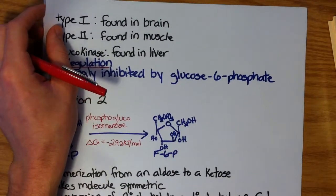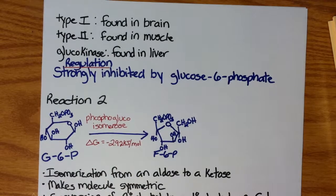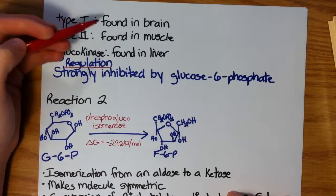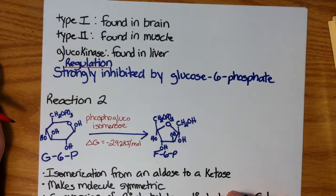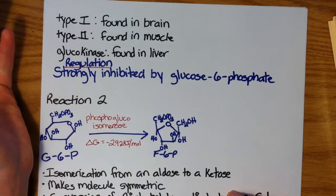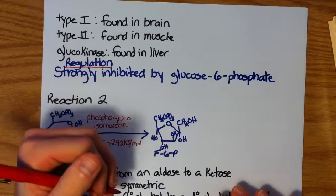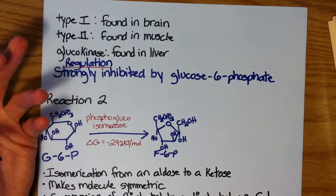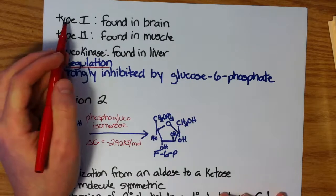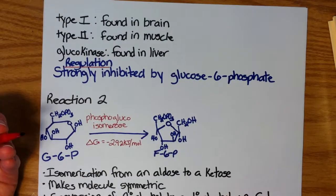Before we get into the regulation of hexokinase, I'm just going to go over the various forms of this enzyme. There's two types of hexokinases. You have type 1, which is found primarily in the brain, and type 2, which is found in the muscle. If you remember from your basic biology classes, brain cells primarily or exclusively use glucose, sugars, to make energy. And because the brain is such a vital organ, and because it only uses sugars to make cellular energy, the type 1 hexokinase is relatively efficient, has a relatively high binding affinity for glucose and ATP.